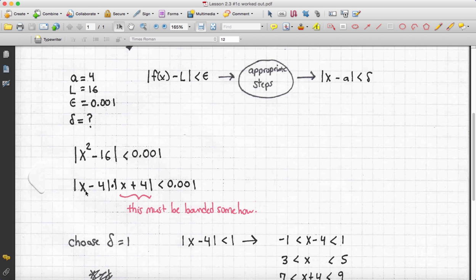Things are looking pretty good because the finish line would be x minus 4 is less than some number, and lo and behold, here's an x minus 4. The problem is that we have to somehow get rid of the x plus 4 in the absolute value.